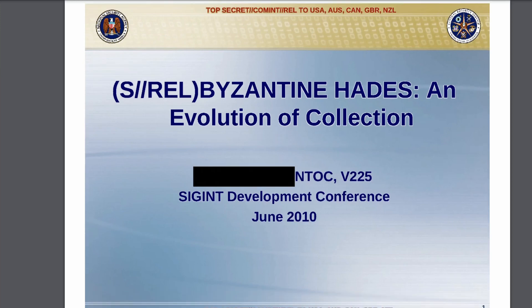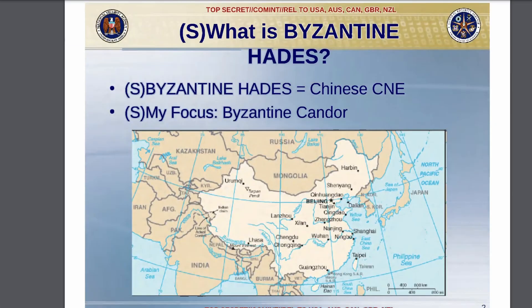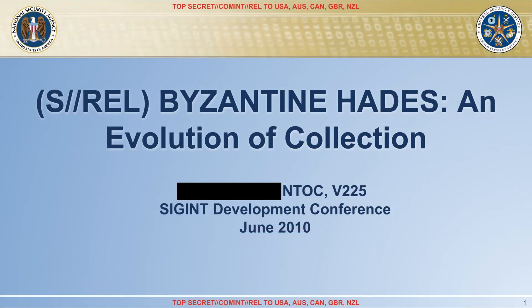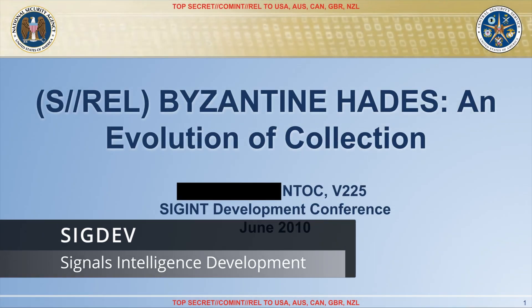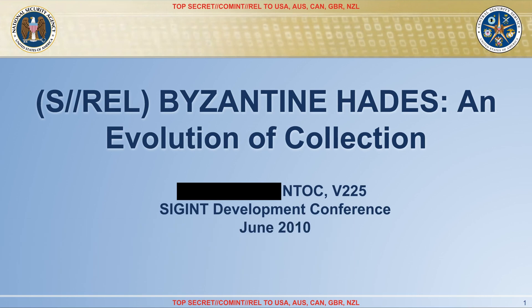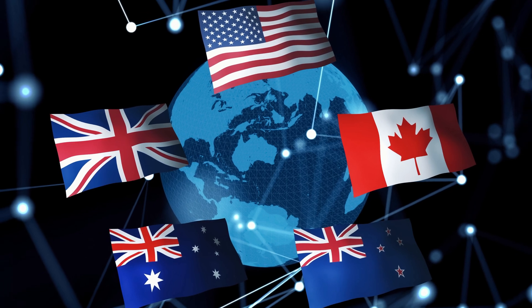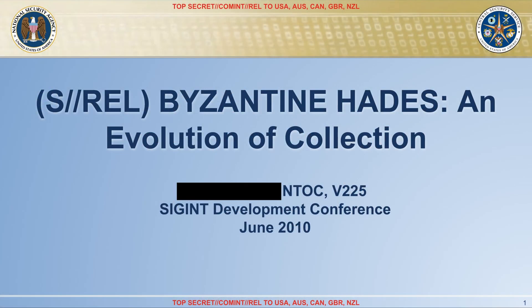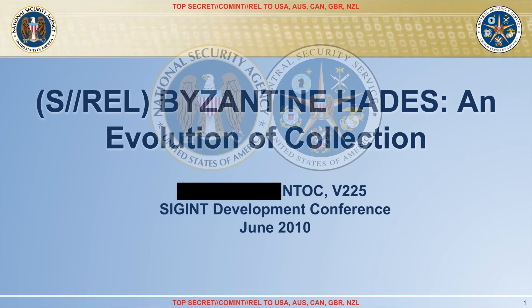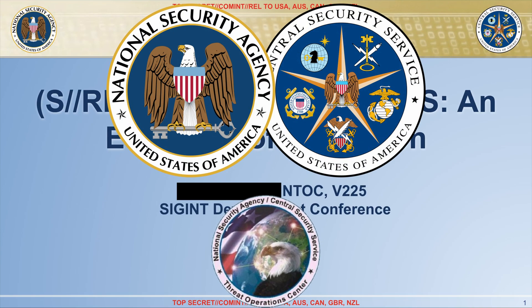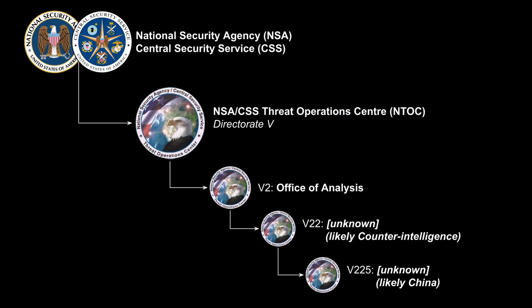As always, we have reconstructed the slide deck so that it's easier to present and navigate. As you can read in the opening slide, this was from the SIGDEV conference of June 2010, approximately 13 years ago. This conference was held by the SIGINT agencies of the Five Eyes — that is the US, UK, Australia, Canada and New Zealand — to share some of their learnings and insights. This specific presentation was performed by the NSA-CSS Threat Operations Center, or ENTOC, V225, likely referring to a team in ENTOC dedicated to cyber counterintelligence for China.